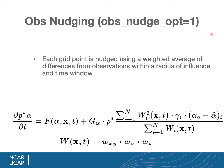OBS nudging is used when you want to control the model at high resolution using your own observations that are additional to any analysis used to initialize the model. It allows observations to be added even while the model is running, treating the model like a moving analysis. Each grid point is nudged using a weighted average of differences from observations within a radius of influence and a time window. The nudging equation contains the regular forcing terms plus a complex nudging term with relaxation, which is a sum over errors at different observation sites — from 1 to N observations influencing a particular grid point.